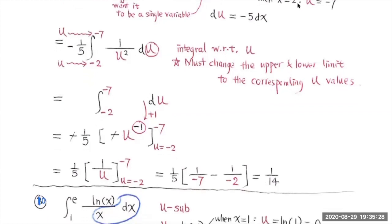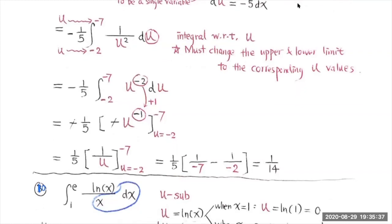After you have done this, we find the antiderivative of 1 over u squared. We write this as u to the negative second power, then increase the exponent by 1 and divide by that exponent. Now we evaluate from negative 2 to negative 7. Substitute negative 7 into u and negative 2 into u, subtract, and that gives the result.